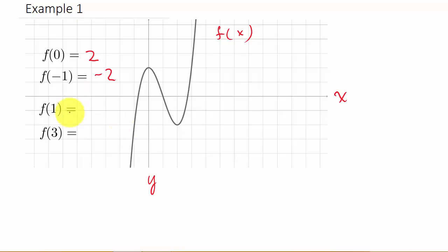So let's look at another one, f of 1. So we start here at 0, 0 and we move on the x-axis until we get to where x is 1. So x is 1 right here. Now we have to move up or down until we hit the graph.